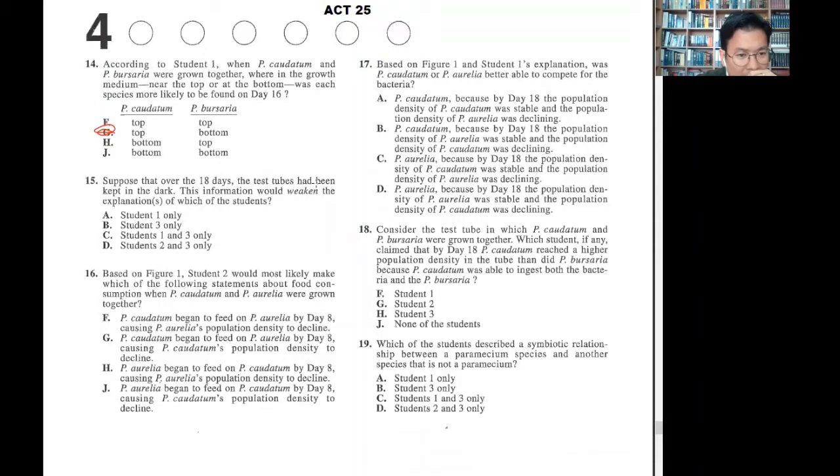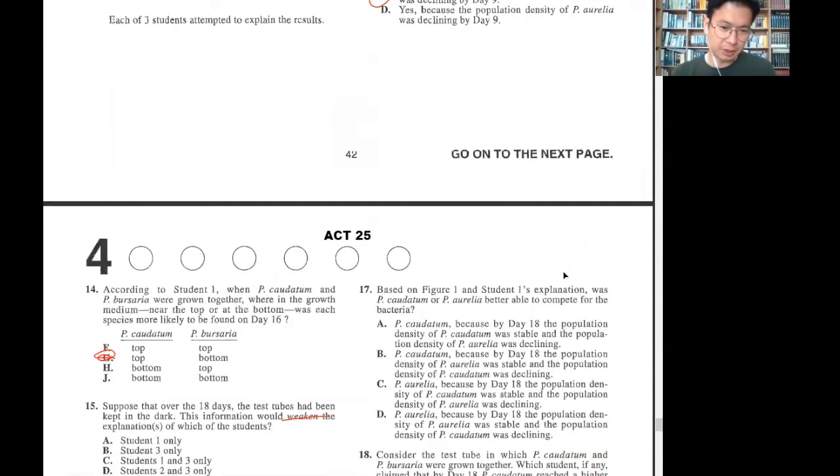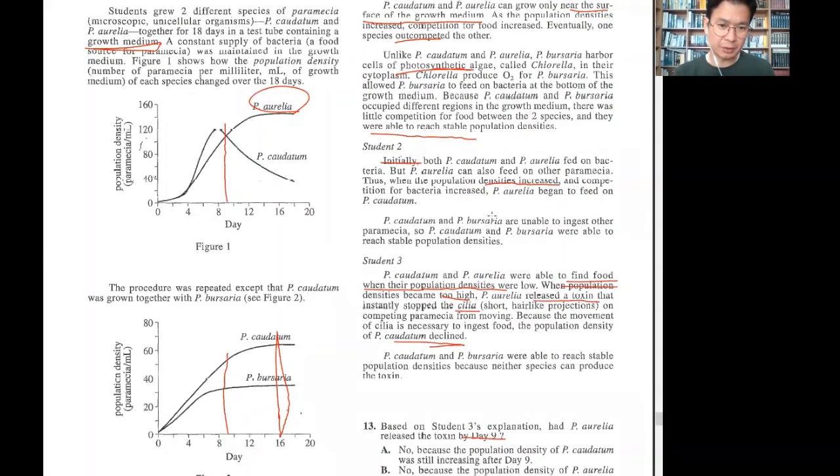Suppose that day 18 test tube has been kept in the dark. Student 1 says here, unlike this, that harbor cells of photosynthetic algae. Photosynthetic is the one related to sun. So student 1 is the one that talks about it. Student 2 and 3, we don't see any photosynthesis.